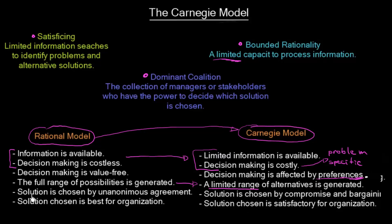Under the rational model, a solution is chosen by unanimous agreement, meaning everyone in the organization agrees to the same solution. In reality, a solution is chosen by compromise and bargaining. This brings us to the third idea: the dominant coalition, which is the collection of managers or stakeholders who have the power to decide which solution is chosen. No organization operates in such a way that everyone agrees; there are always dominant coalitions who make the final decision.